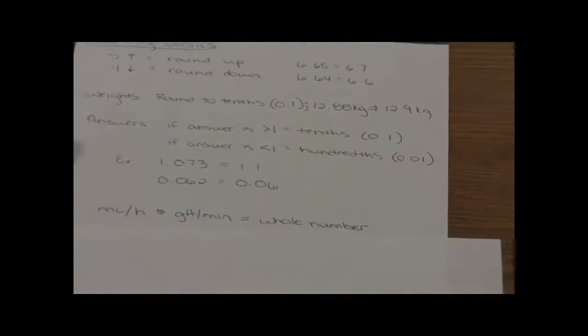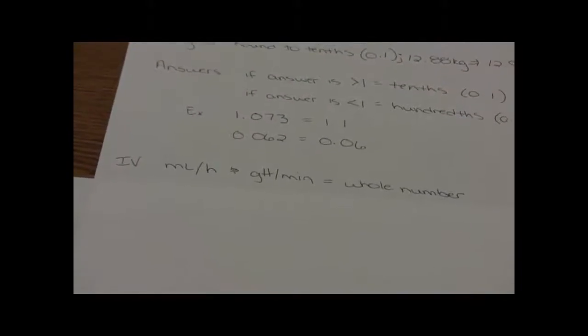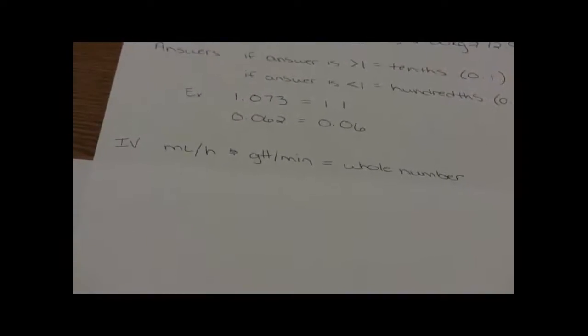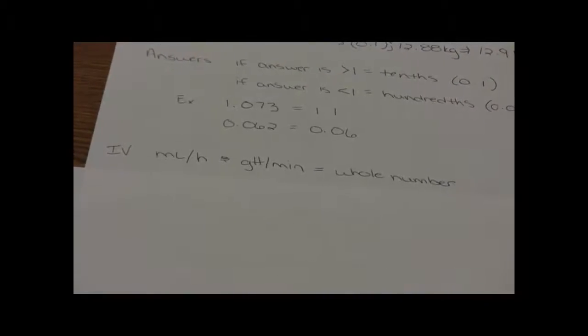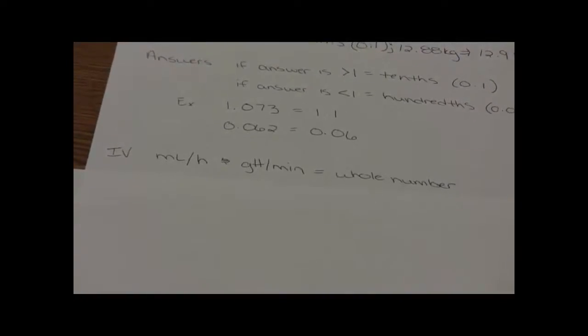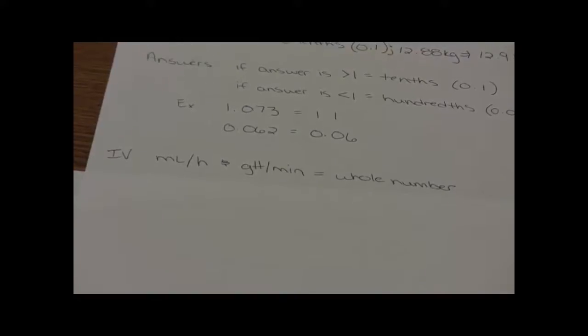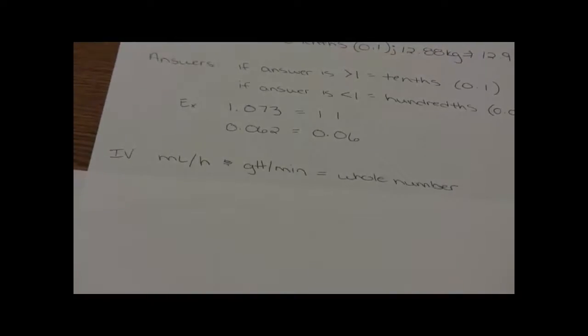A few other rounding things: IVs — if we're going to set a pump at milliliters per hour, or if we're going to count drops per minute, that is really the only time we're going to round to a whole number. The reason is we can't count a third of a drop when counting IV drops. And pumps, usually on most floors unless it's peds or critical care, we're going to round to the whole milliliter per hour.